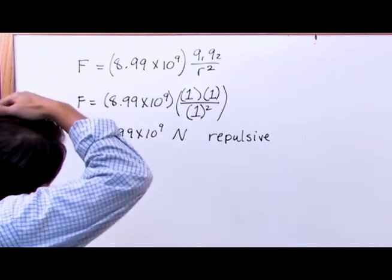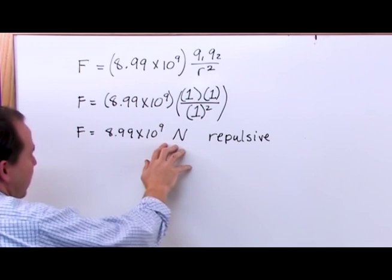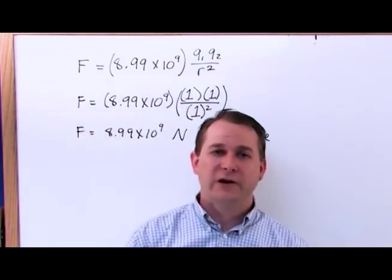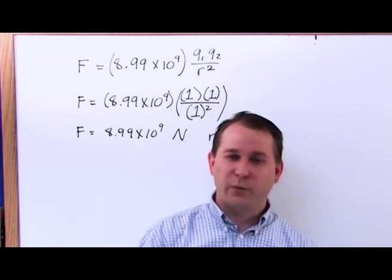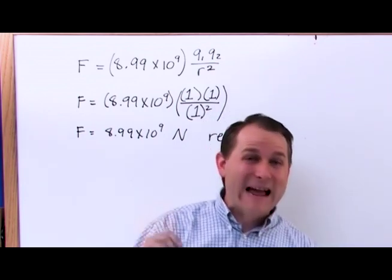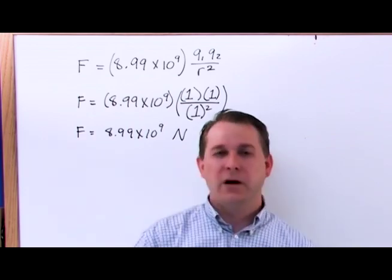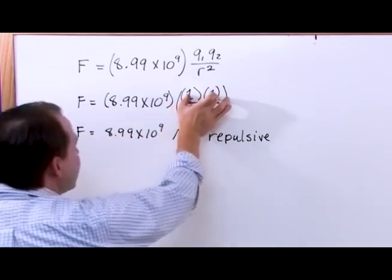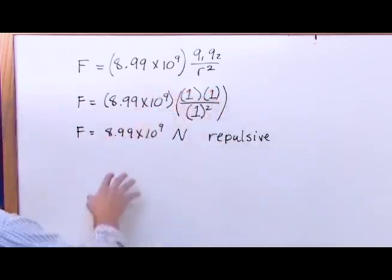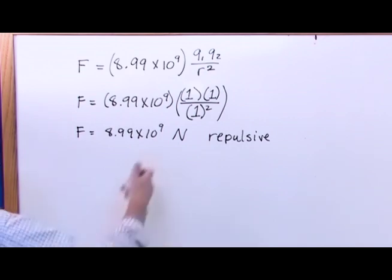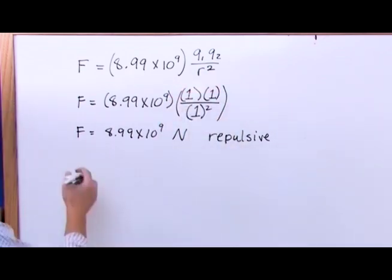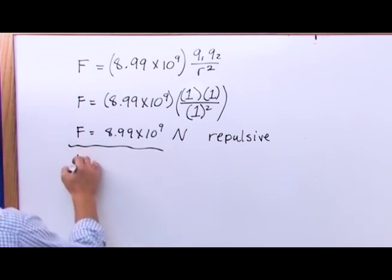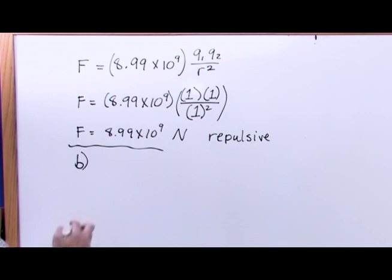Notice that it's a huge force — that's because one coulomb of charge is a huge charge. We said one electron was 1.6 times 10 to the minus 19 coulombs. So this is a very huge charge, and that's why the force, if you could ever build something with this much charge on two different objects, would produce an incredible amount of force. Now doing this is going to be almost impossible — that's just a huge amount of charge.